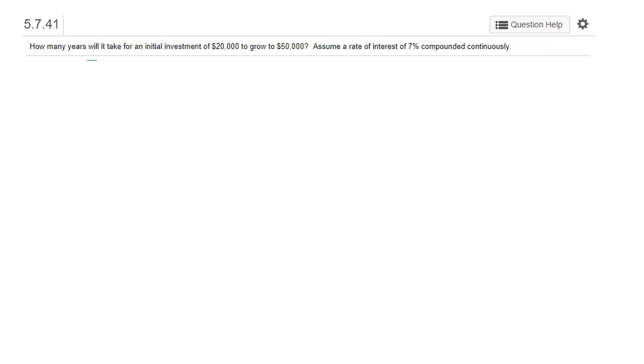Okay, so suppose we have $20,000. That's our initial investment. So I'm going to go ahead and label that as our principal. We want to grow it to 50,000. So that's our final amount, assuming an interest rate of 0.07 compounded continuously. So we're going to use that exponential form. How many years? So the unknown is T. So we want to end up with 50,000 with an initial principal investment of 20,000 E to the 0.07t. Well, divide by 20,000.